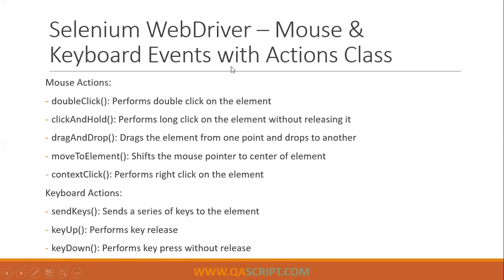Apart from performing normal actions on your application, like normal mouse and keyboard actions like a simple click or entering some text into a text box, while automating your application you will come across scenarios where you need to perform advanced user interactions using the mouse and keyboard events — like performing a double click, a right click on a particular element, or dragging and dropping something from one place to another.